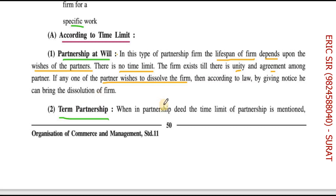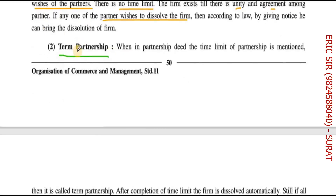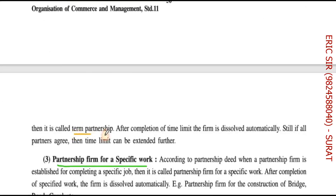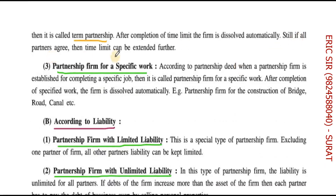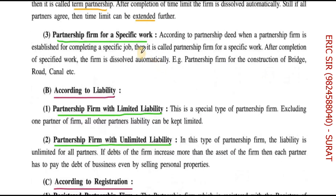The second type is term partnership. When in the partnership deed the time limit of the partnership is mentioned, it is called term partnership. After completion of that time limit the firm is dissolved automatically. However, if partners agree, the time limit can be extended further — it may be for five years, ten years, or any particular period of time.